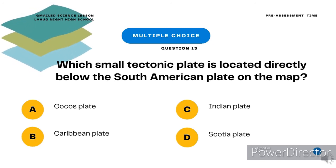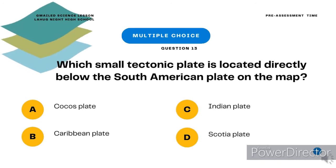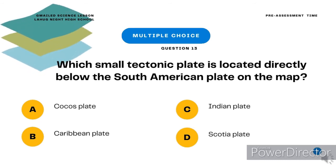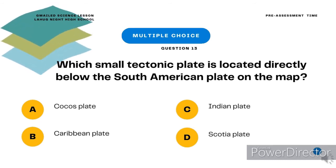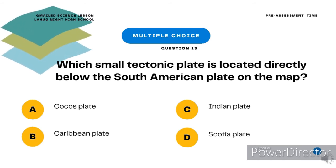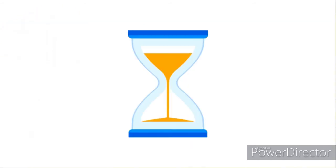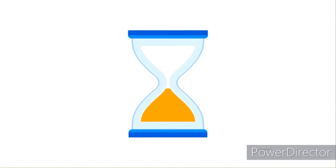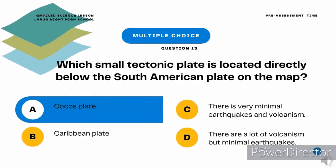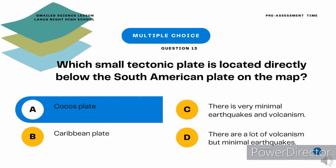Multiple choice question 13. Which of the following is not one of the major tectonic plates? A. Cocos Plate. B. Caribbean Plate. C. Indian Plate. D. Scotia Plate. The correct answer is letter A, Cocos Plate.